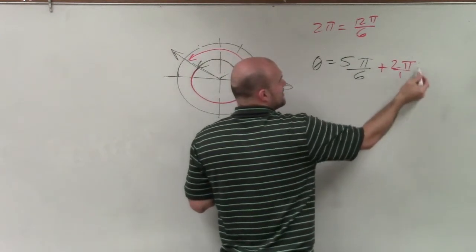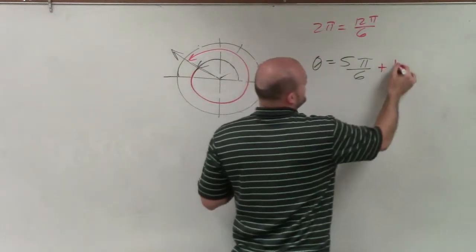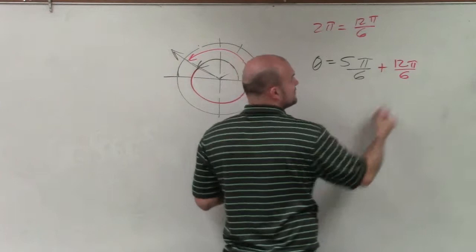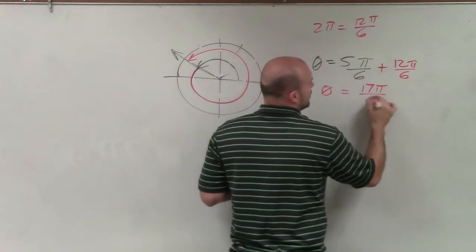So to do that, I can multiply by 6 over 6. That's how I got 12π over 6. But rather than having to do all that math, I'm just going to write that out. 12π over 6. So therefore, you can see my first coterminal angle, the smallest positive, is going to be 17π over 6.